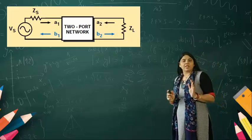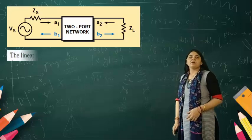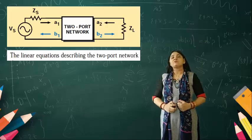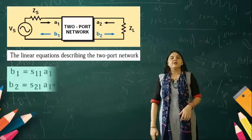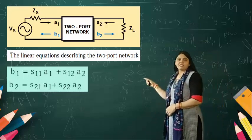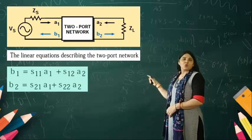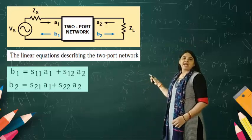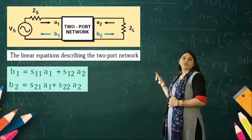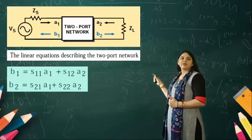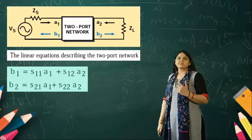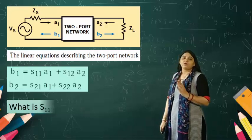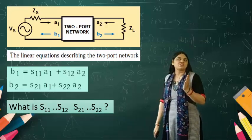We can describe a linear relationship between the two-port network by writing: B1 = S11·A1 + S12·A2, and B2 = S21·A1 + S22·A2. This way we can describe the equations and get an idea about the behavior of any microwave component. S11, S12, S21, and S22 are the S-parameters.